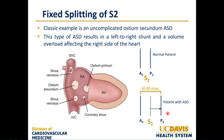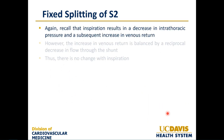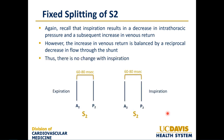In the setting of an atrial septal defect, the increase in venous return with inspiration is balanced by a reciprocal decrease in flow through the shunt, so there is no change with inspiration. In expiration, the difference between A2 and P2 is 60 to 80 milliseconds. When the patient inspires, because of this balance between increased venous return and decreased shunt flow, there is no change and the difference between A2 and P2 remains 60 to 80 milliseconds — hence the term fixed split S2.